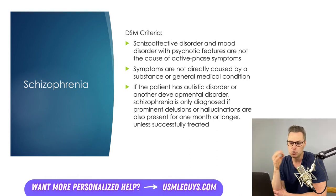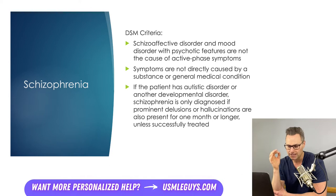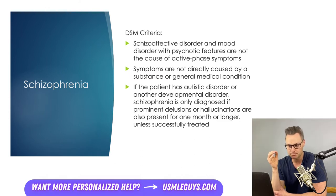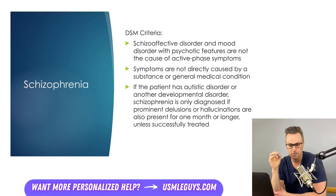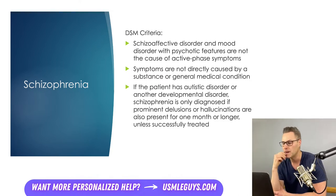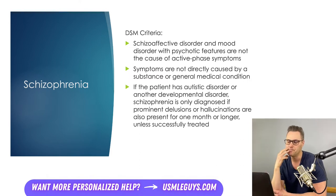Schizoaffective disorder and mood disorder with psychotic features are ruled out for a schizophrenia diagnosis because there are no major depressive, manic, or mixed episodes occurring at the same time as active phase symptoms — or if they are occurring simultaneously, their duration is brief compared to the active and residual periods. Symptoms also cannot always be attributed to substance use or a general medical condition. For patients with autistic disorder or other developmental disorders, more stringent criteria apply: the patient must have prominent delusions or prominent hallucinations present for at least one month unless successfully treated.